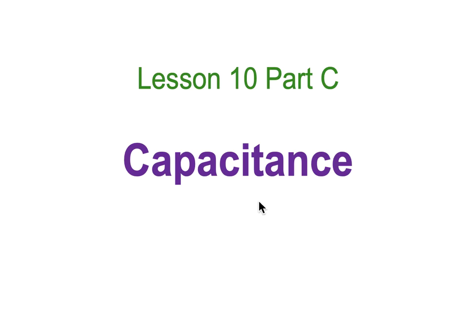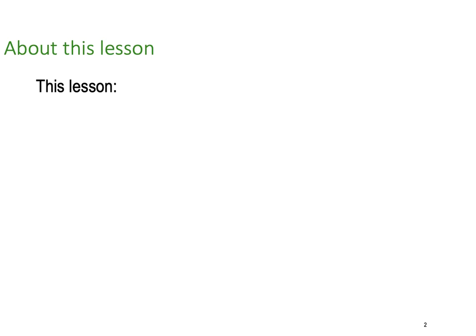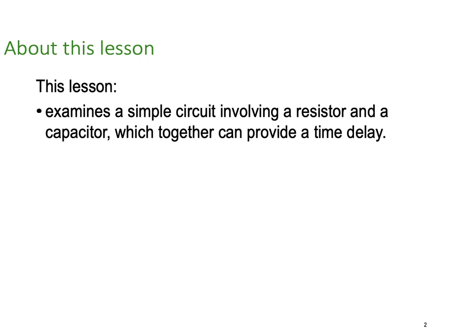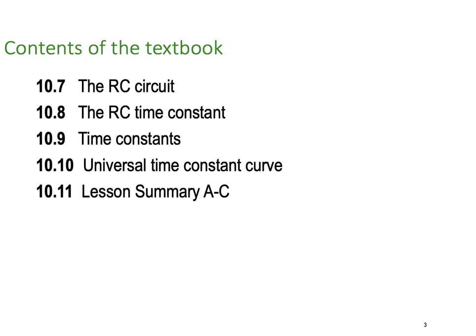This is Lesson 10 Part C, our final DC theory lesson about capacitance. In this lesson we're going to examine some simple circuits involving resistors and a capacitor which together can provide time delays. We're working from the textbook 'Electrical Principles' by Phillips, sections 10.7 through 10.10 — covering the RC circuit, the time constant, the universal time constant, and a summary of all lessons 10A through 10C.